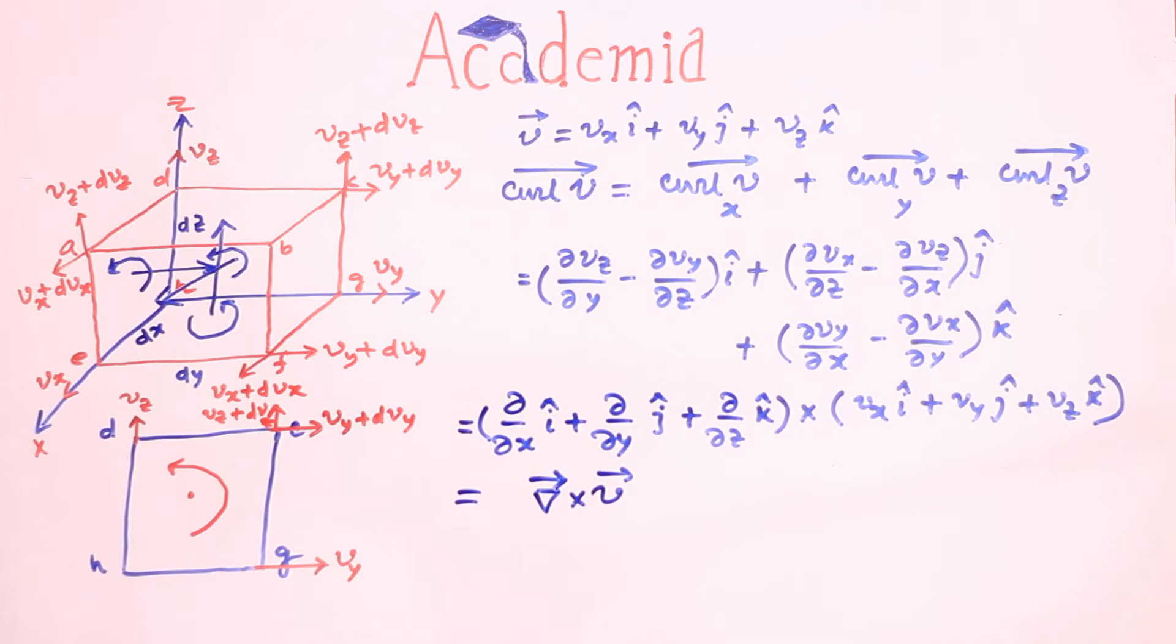We have already seen that whenever we need to know the curl of the velocity vector in a particular direction, a closed contour has been taken.